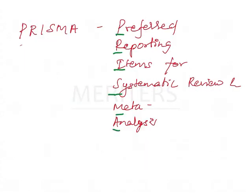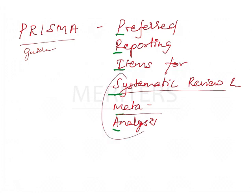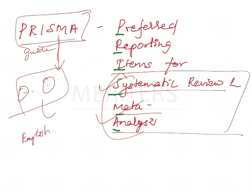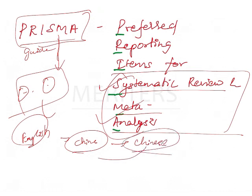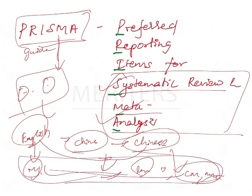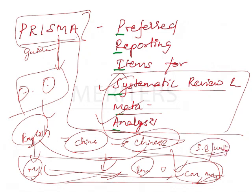Coming to PRISMA — PRISMA stands for Preferred Reporting Items for Systematic Reviews and Meta-Analyses. For doing any systematic review or meta-analysis, we should stick to the PRISMA guidelines. It helps with standardization and comparability. For example, if a study is done in India in English and another in China in Chinese, or if different units are used, comparison becomes difficult. PRISMA instructs us to use SI units, making studies comparable across languages and regions.